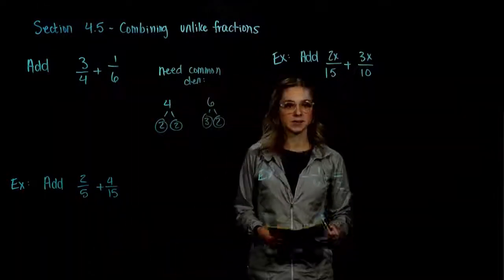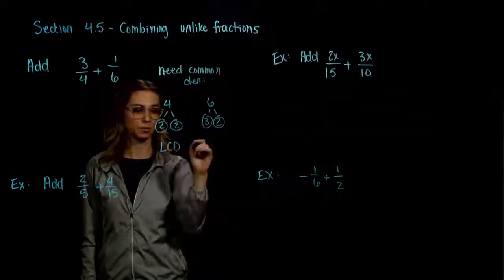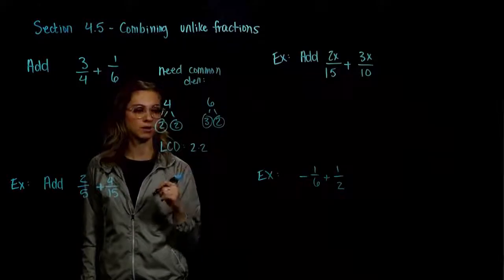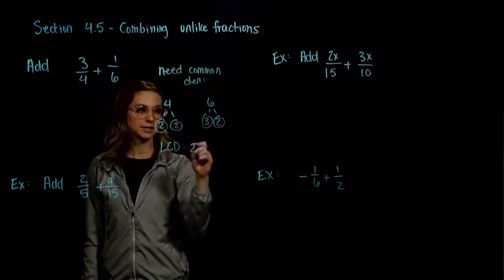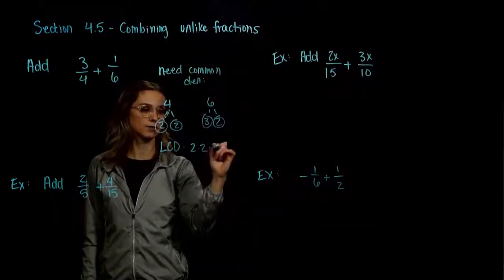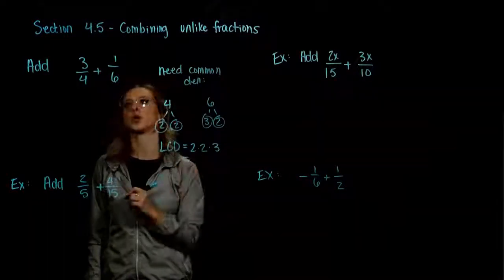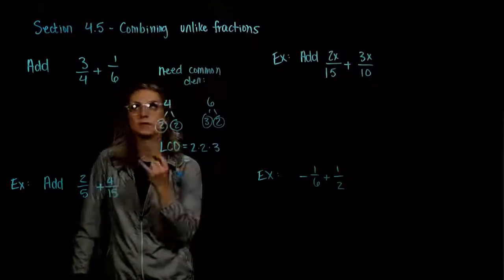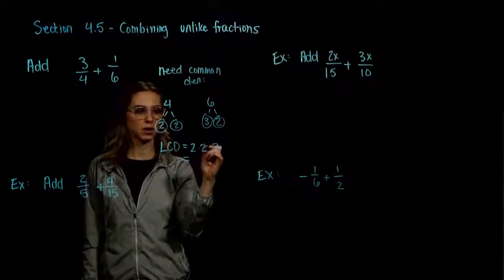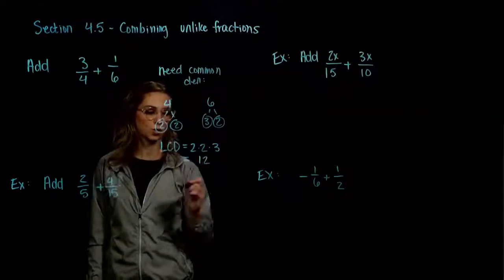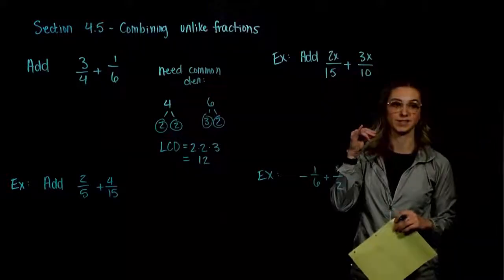Now we can start building. Our LCD has to be divisible by 4, so I need to take into account a factor of 2 and another factor of 2. And what is our LCD missing that 6 has? A factor of 3. So the least common multiple between 4 and 6 — they happen to live in the denominators — is 2 times 2 is 4, and 4 times 3 is 12.